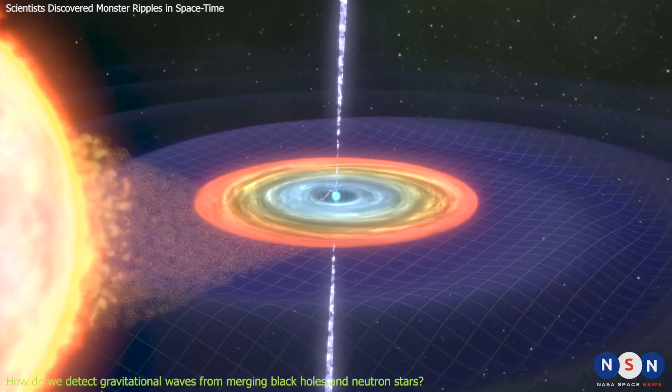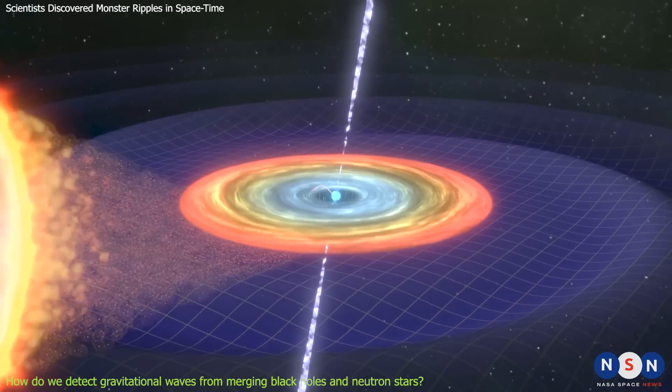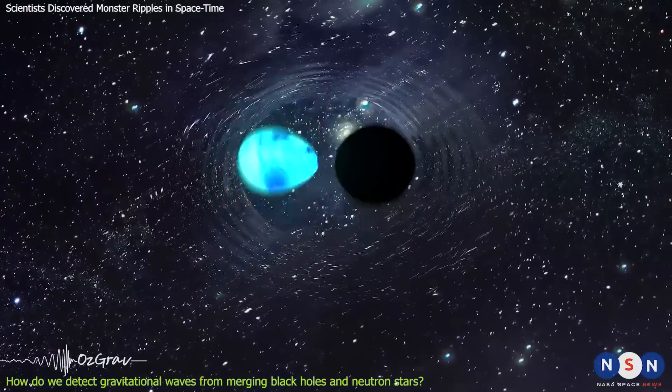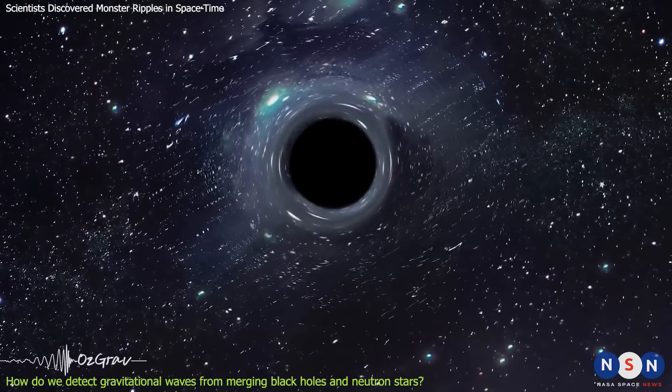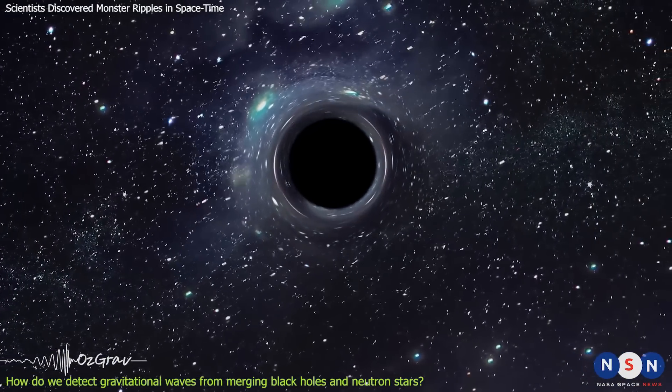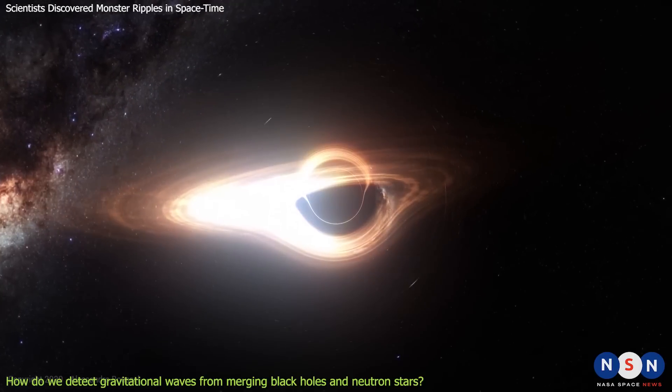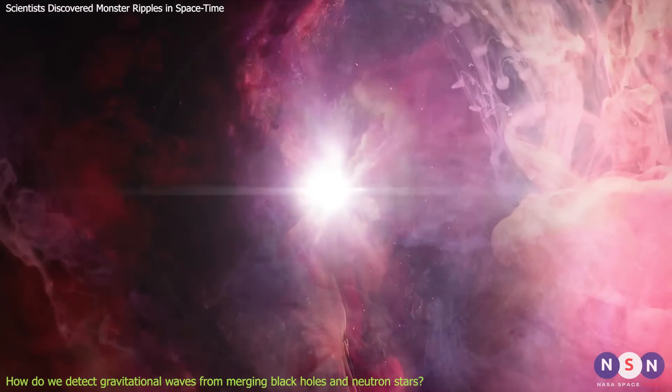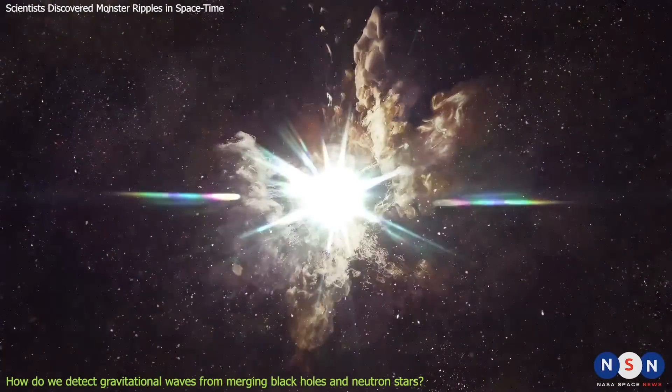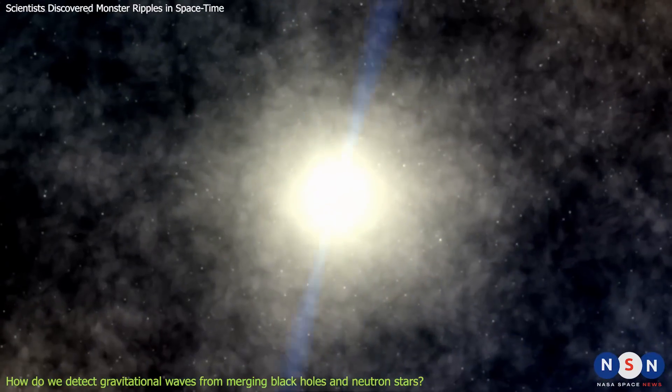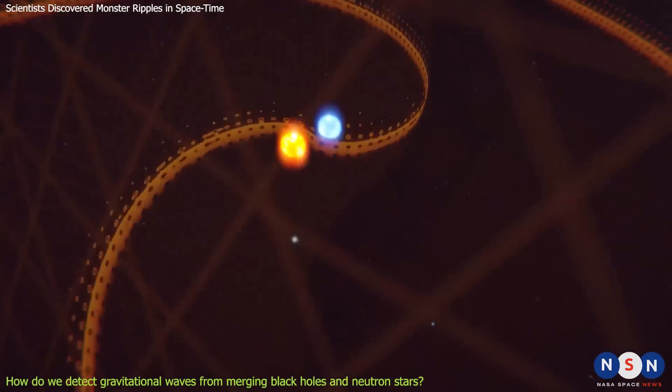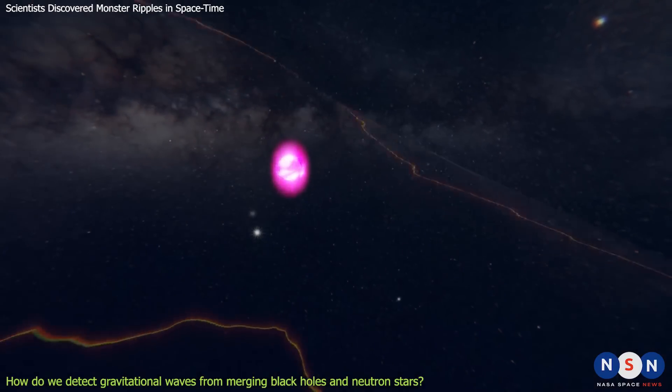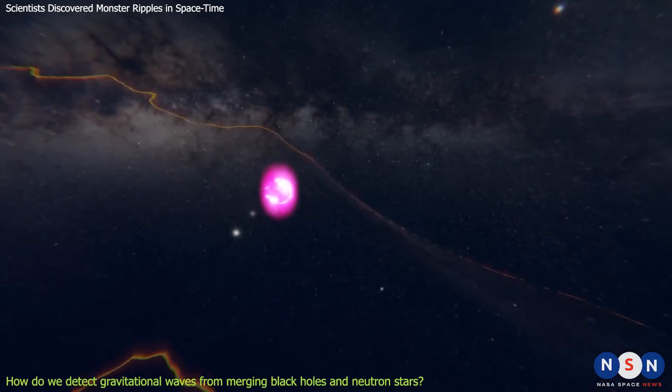LIGO and its counterpart Virgo in Europe have since detected dozens of gravitational waves from merging black holes and neutron stars. These are some of the most violent events in the universe, releasing enormous amounts of energy in a fraction of a second. Black holes are regions of space where gravity is so strong that nothing can escape, not even light. Neutron stars are the remnants of massive stars that have collapsed under their own weight, forming dense balls of matter. When two black holes or neutron stars spiral into each other and merge, they create powerful ripples in space-time that can be detected by LIGO and Virgo.